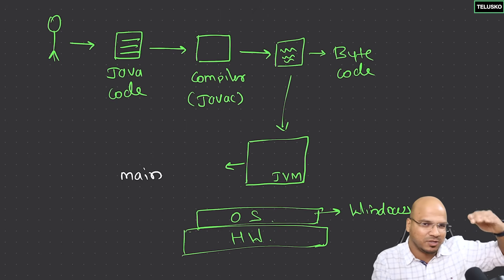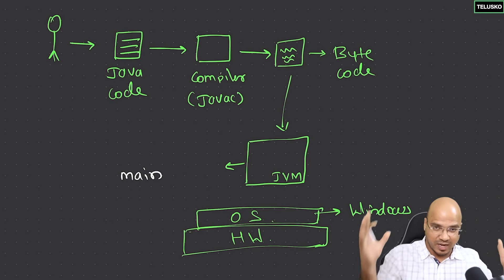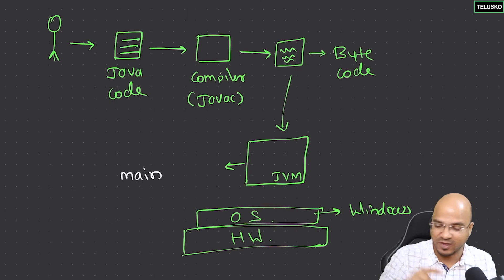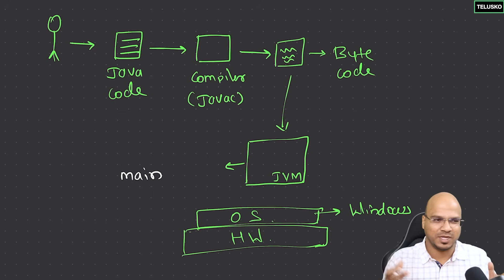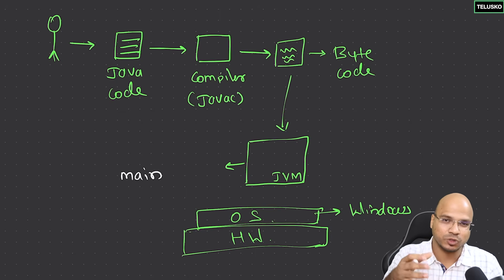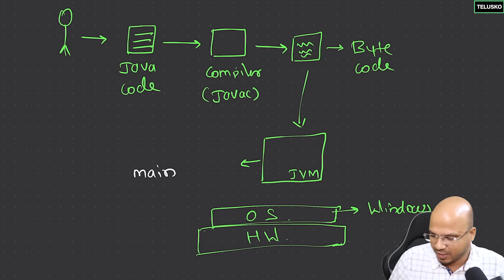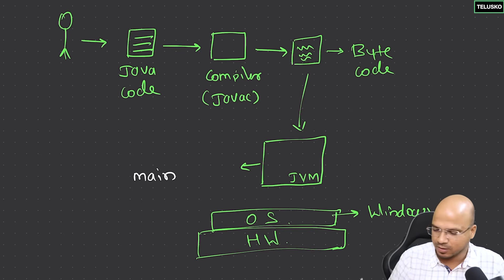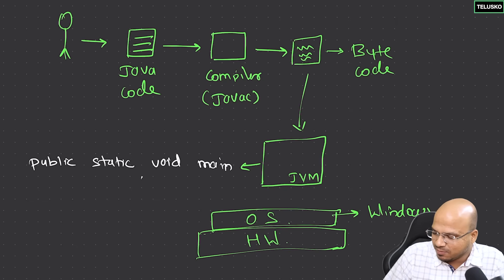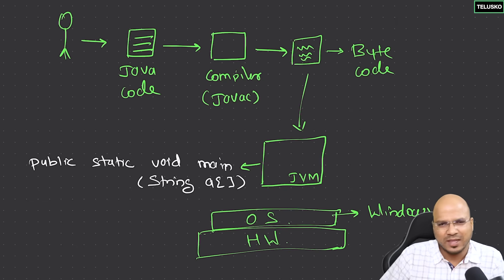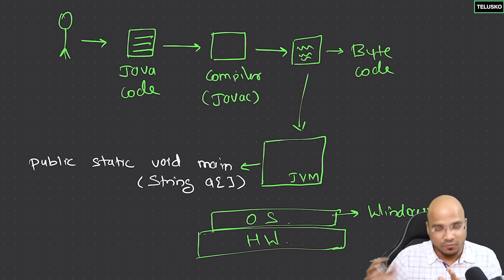When I say first file, it's not like you follow a sequence — out of all the files in your project, execution will start from the file you specify. That file needs to have main — not just main, it is looking for a specific signature: the entire method signature, the method name, what values you are passing, and all that. You will get used to these terms in upcoming sessions. The signature is: public static void main, and main will accept some arguments — you have to pass String[] args. Your code will not work without this signature.